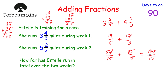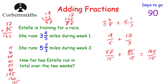Let's change 142 fifteenths into a mixed number. The line means divided by, so we see how many fifteens go into 142. Ten times 15 would be 150, so nine times 15 is 135. Listing multiples of 15: 15, 30, 45, 60, 75, 90, 105, 120, 135 — that's nine. We had 142, so the remainder is seven. So the answer is nine and seven fifteenths miles. How far did Estelle run over the two weeks? Nine and seven fifteenths miles.